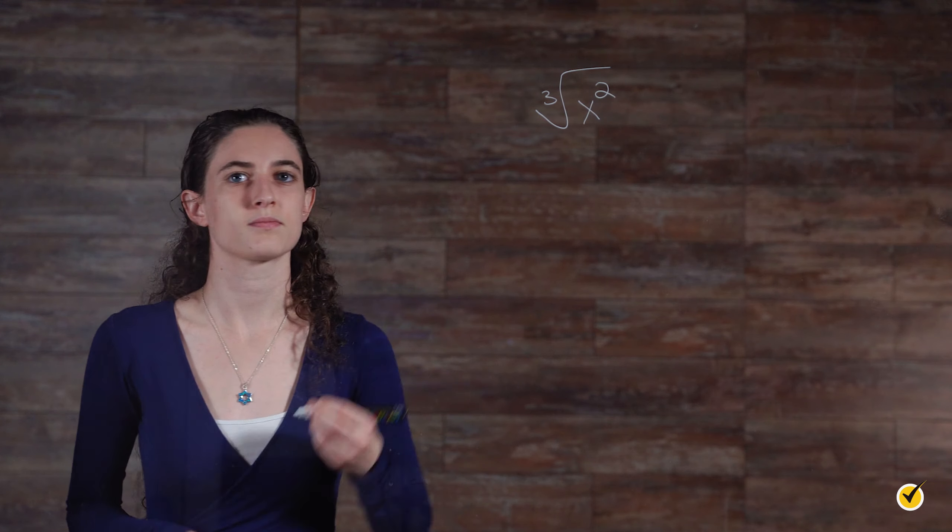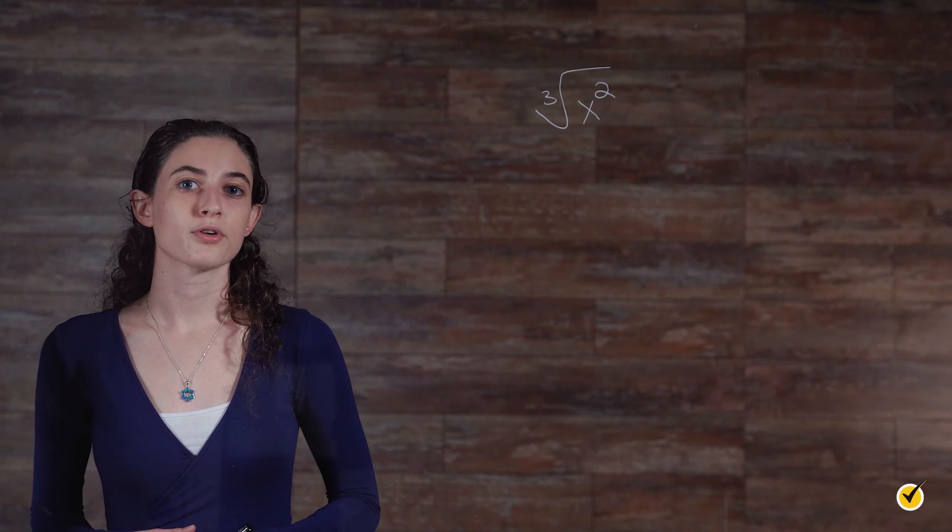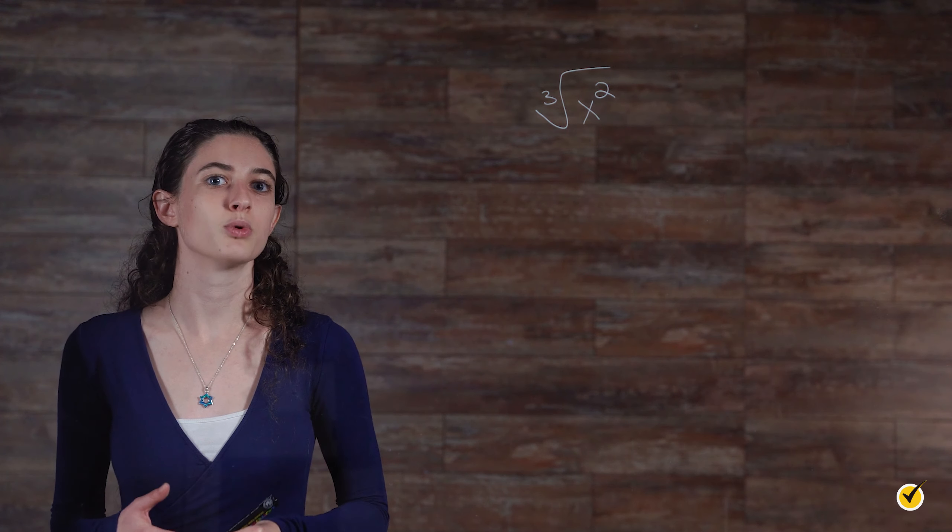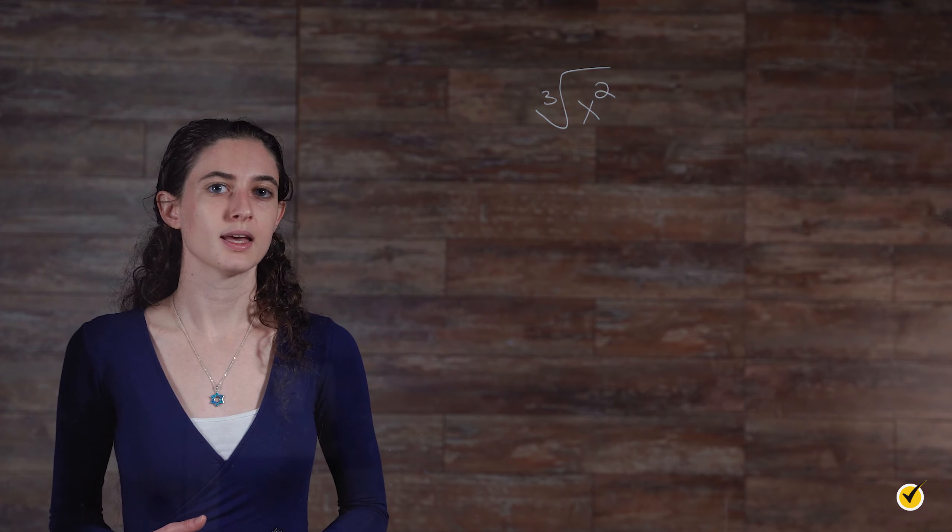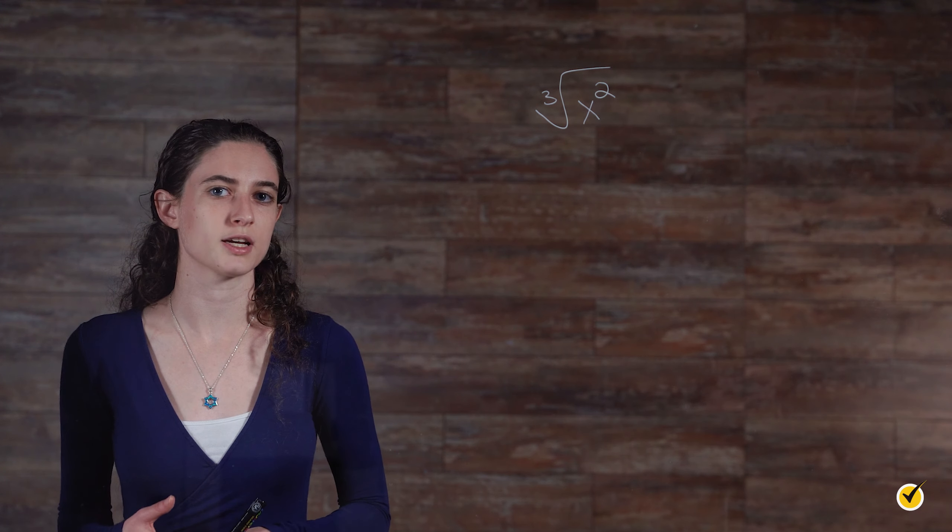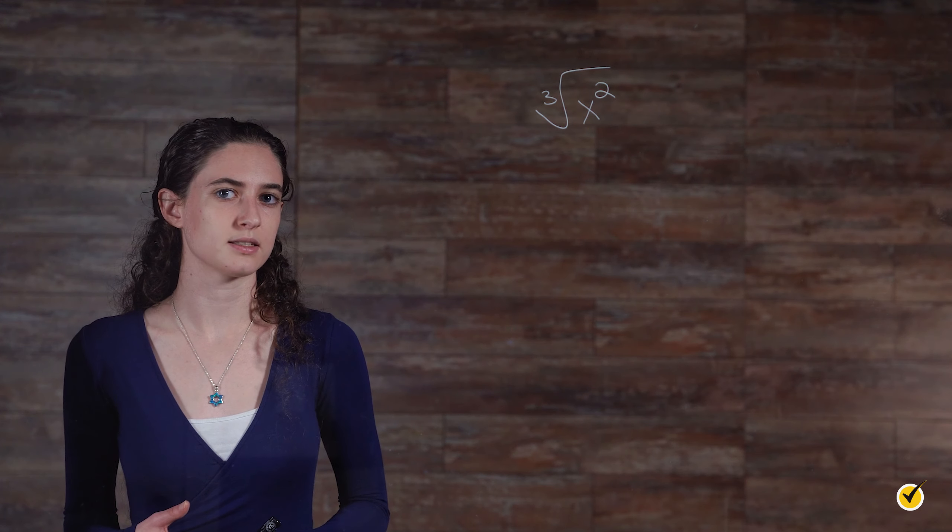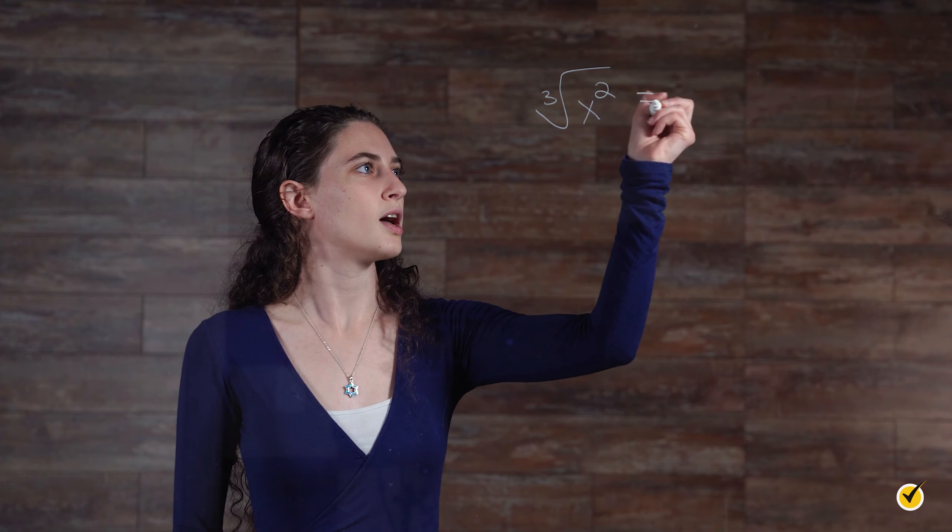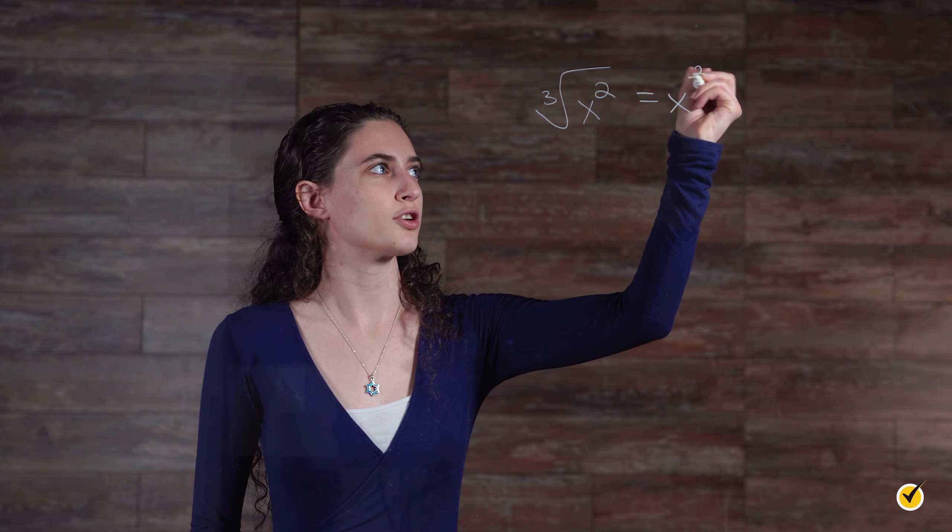First, let's practice expressing a radical as a fractional exponent. So we're going to look at the cube root of x squared. Remember, the index of the radical becomes the denominator of the fractional exponent, which in this case is 3. The exponent of the radicand becomes the numerator of the fractional exponent, which is 2 in this case. So our fractional exponent is x to the two-thirds power.